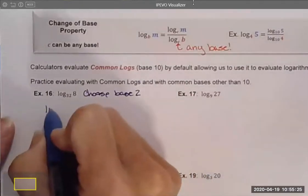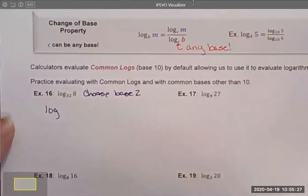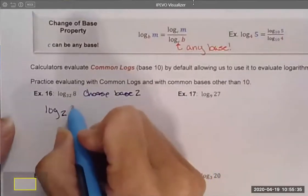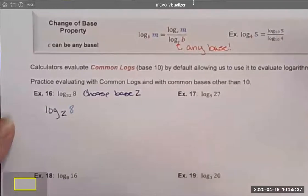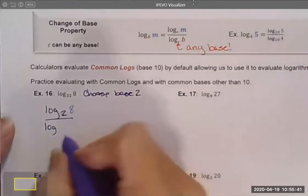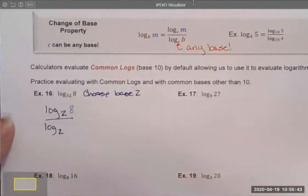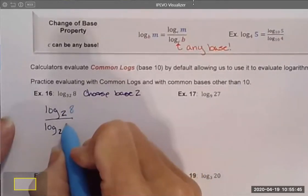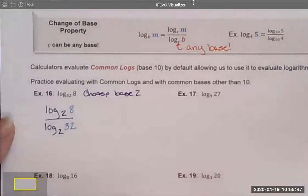Choose base 2 because they're both powers of 2. All right. So I'm going to write this as log. I'm going to use my new base, base 2, of my 8. And then in the denominator, I'm going to put log my new base, base 2. And here's where I put my original base, which was the 32. And so now I've rewritten it this way.